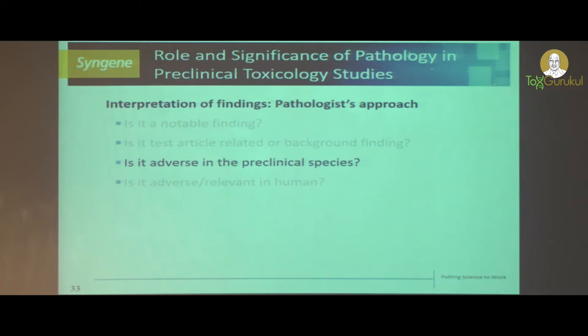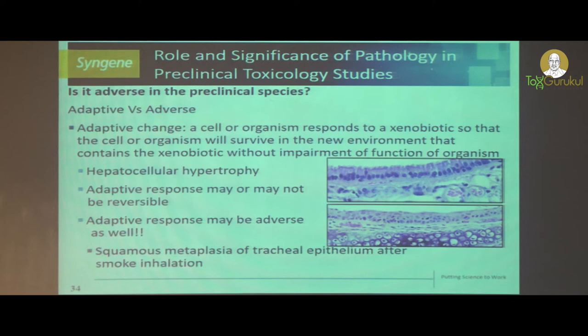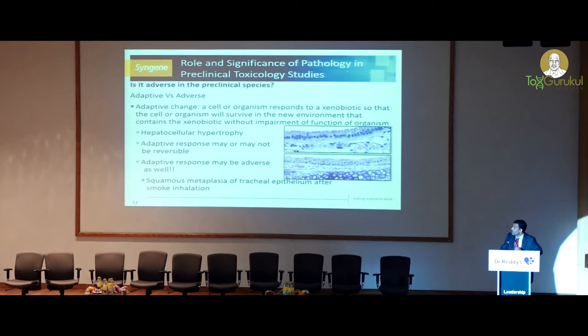Now you have identified a finding as test item-related. The next question is whether it is adverse in the preclinical species. We now have to define adversity — whether it is adverse, non-adverse, or adaptive. There are a couple of definitions we will see here.